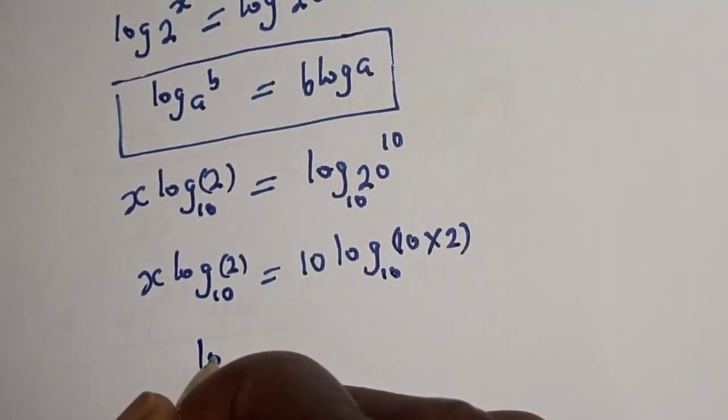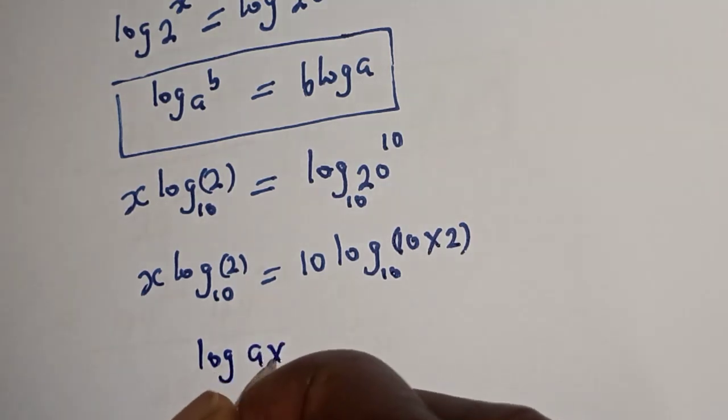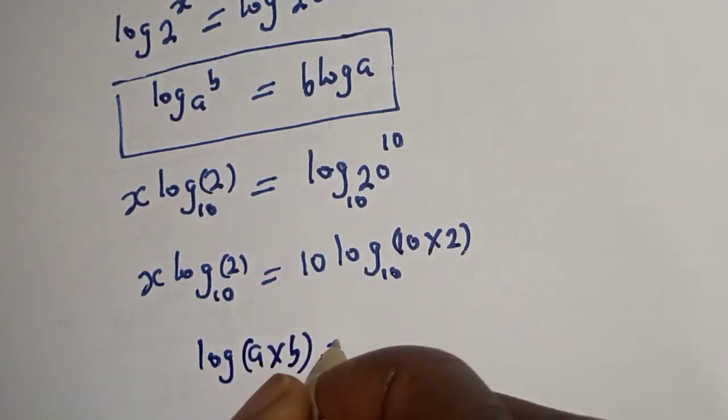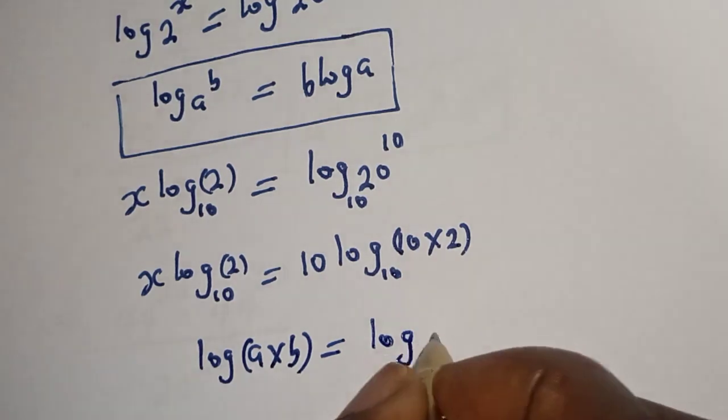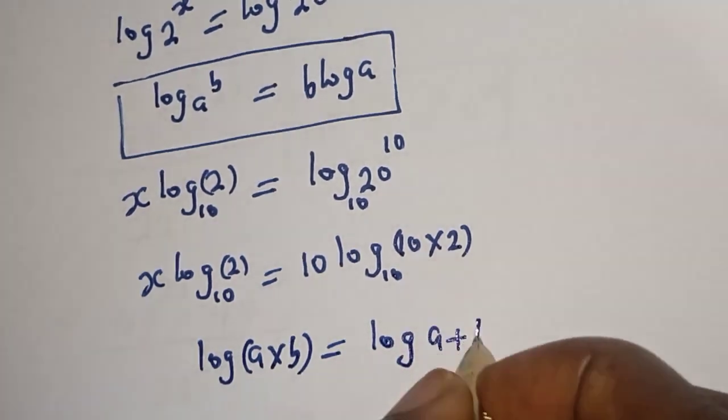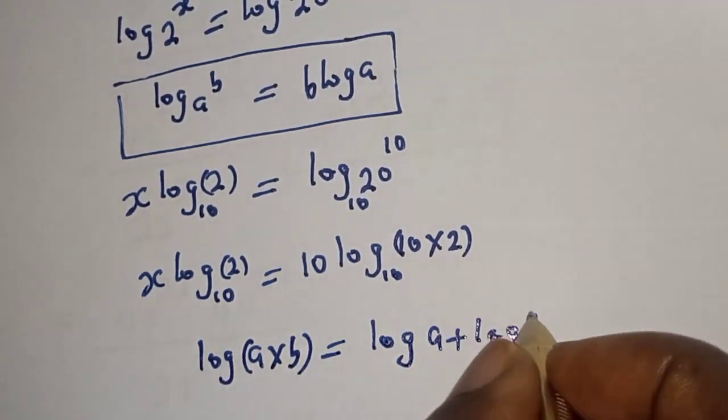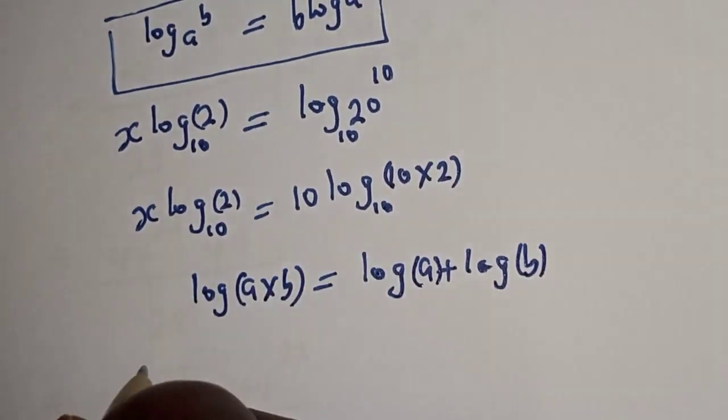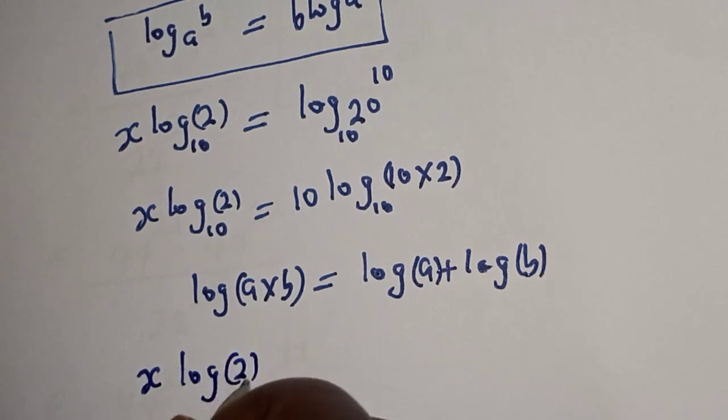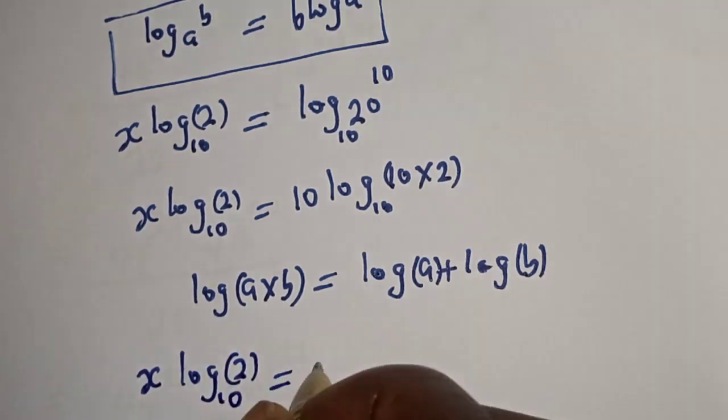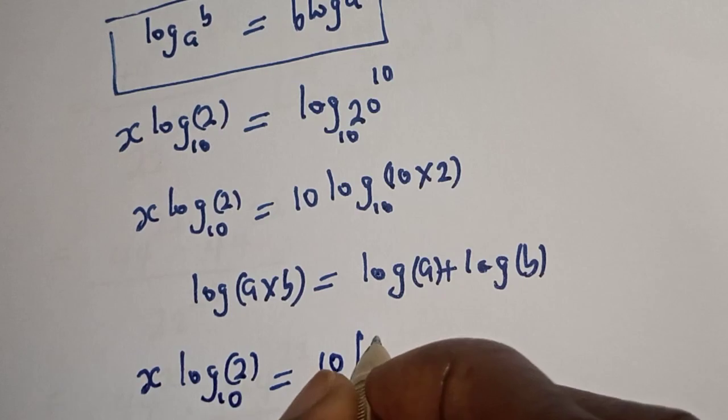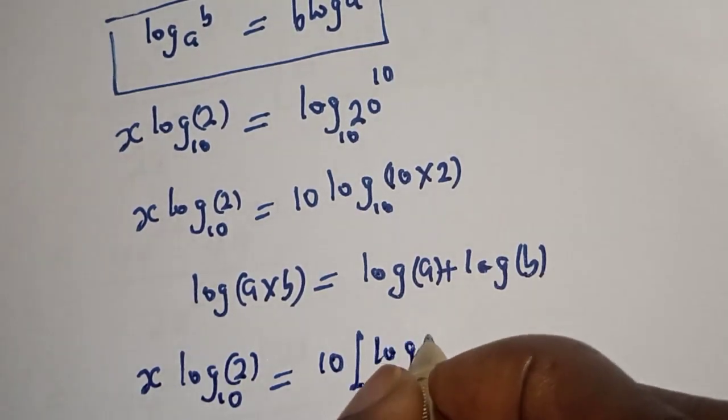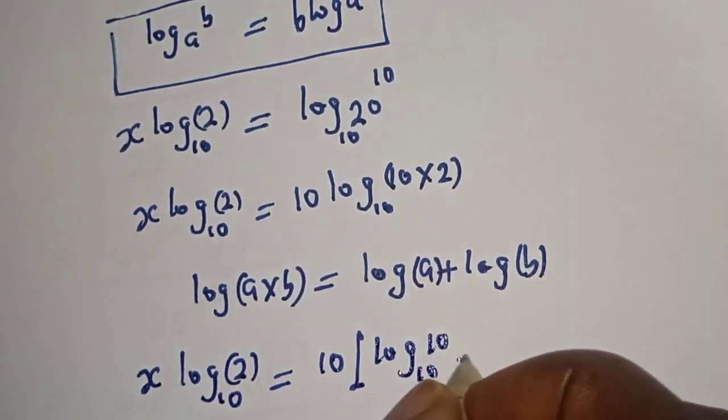If you have log a multiplied by b, this is equal to log a plus log b.